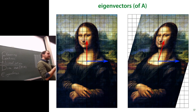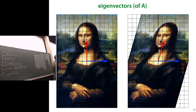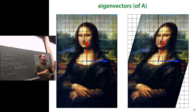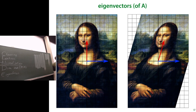Eigenvectors are special vectors whose direction doesn't change under the transformation — their magnitude may change (they get stretched), but not their direction. The red vector changes direction; the blue vector doesn't — that's an eigenvector. Mathematically: if Au = λu for some scalar λ, then u is an eigenvector of A and λ is its eigenvalue. Not all transformations have eigenvectors — a 2D rotation has none, but a 3D rotation has one eigenvector: the rotation axis.